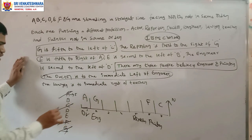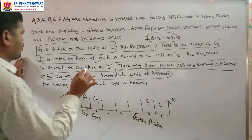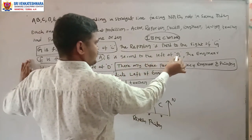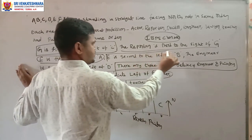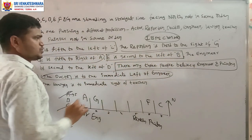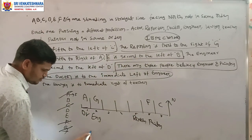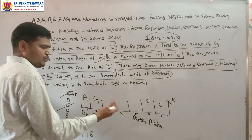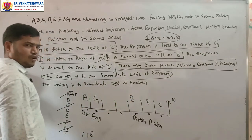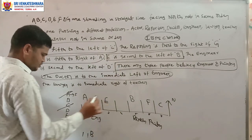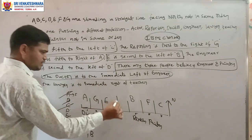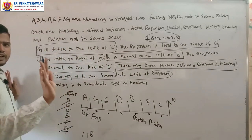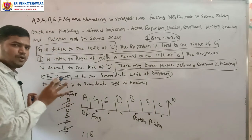With A, G, C, F confirmed, remaining positions are for B, D, and E. The reporter is third to the right of G — that is finished. E is second to the left of B, meaning E is two places left of B. So B is placed at one position and E two places to its left. The remaining letter D fills the last spot — all seven alphabets are now placed.